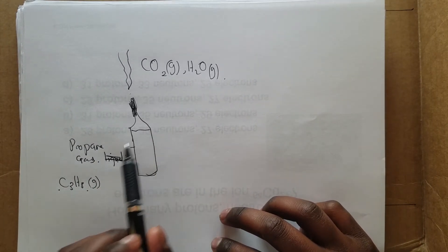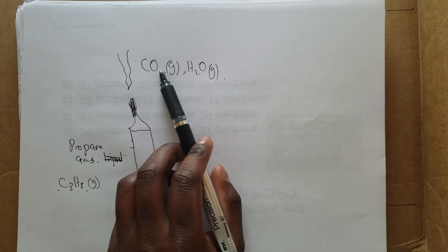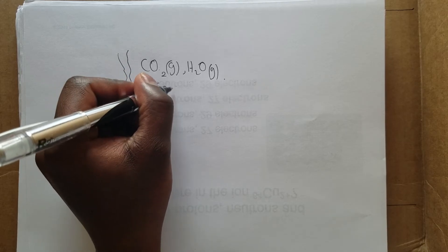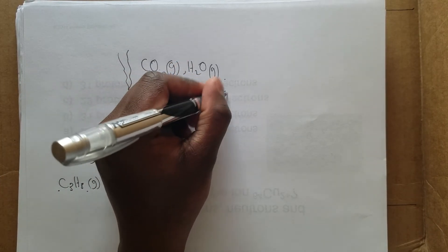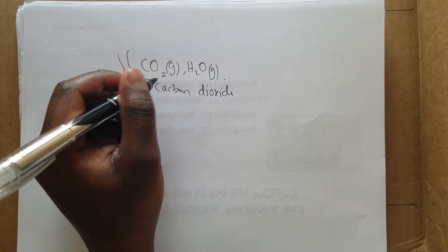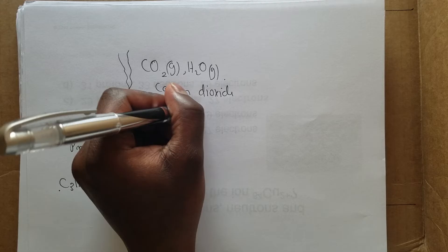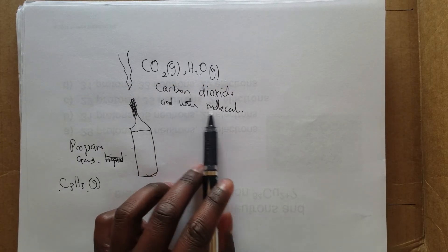Here you can see the compound changes from one compound to whole new different compounds. These are called carbon dioxide and water.